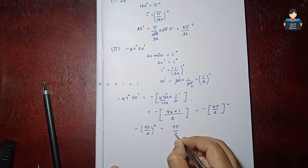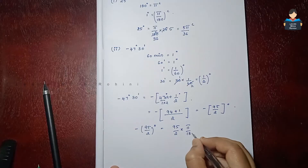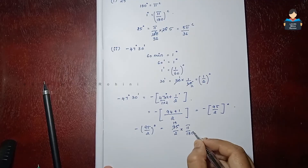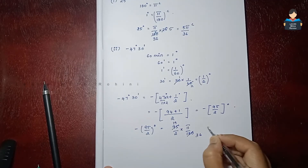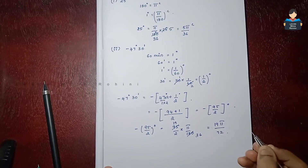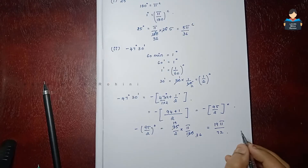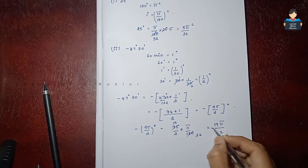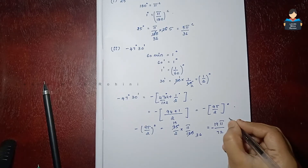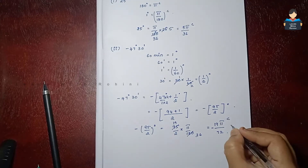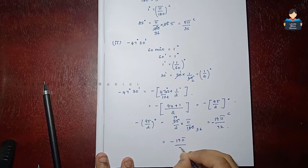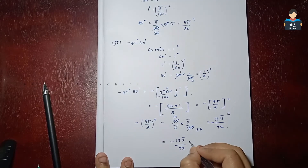So we have minus 95 by 2 into pi by 180. Simplifying, 2 cancels with 180 giving 90, and we get minus 95 pi by 72 radian. This is our answer.